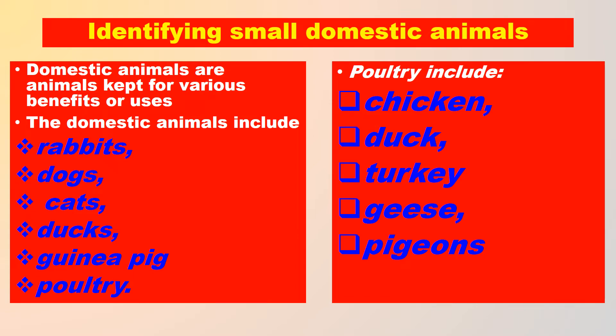Now we want to identify the small domestic animals. Domestic animals are animals kept for various benefits or uses. The domestic animals include rabbits, dogs, cats, ducks, guinea pig, and poultry. The poultry include chicken, duck, turkey, geese, and pigeons.